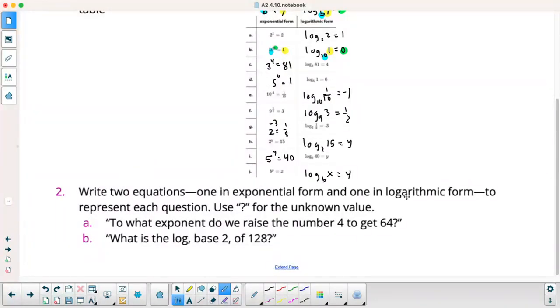Write two equations. One in exponential form. One in logarithm form to represent each equation. Use question mark for the unknown. To what exponent do we raise the number 4 to get 64? I'm going to say 4 to what exponent equals 64? And then I'm going to say log base 4 of 64 is the exponent we're looking for. To what is the log base 2 of 128? Log base 2 of 128 is what we're looking for. And that would be 2 to what power equals 128?